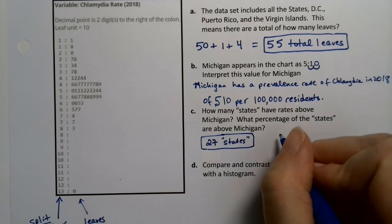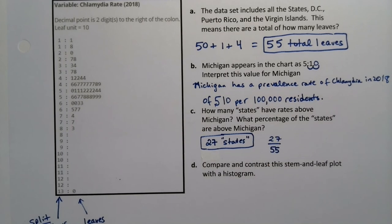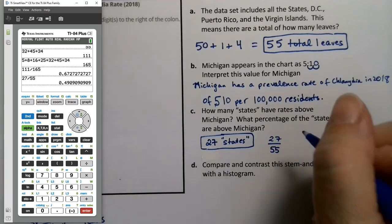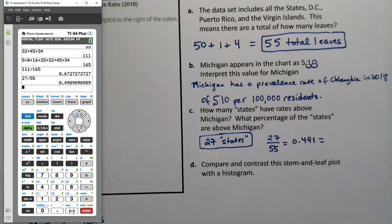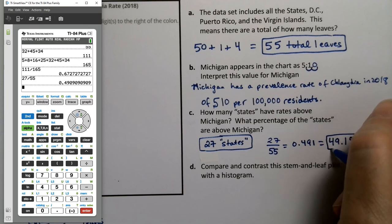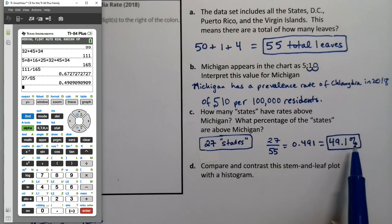And then they want to know a percent. So to find that percent, you have to do the 27 divided by 55 and get a decimal for that, and then we'll convert that decimal into a percent. So that'd be 49.1, which is 0.491, which is 49.1%.